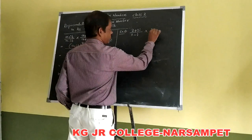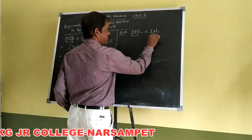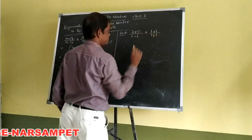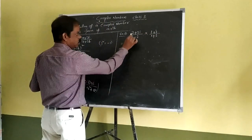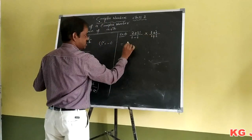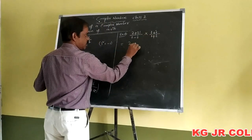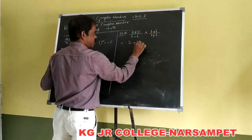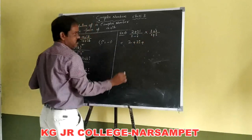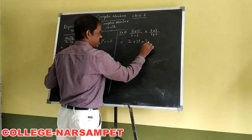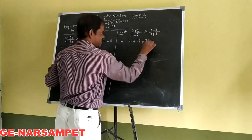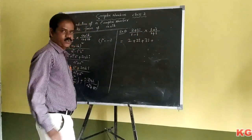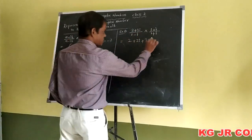So therefore we divide by 1 plus 5i over 1 plus 5i. Expanding the numerator: 2 times 1 equals 2, plus 2 times 5i equals 10i, plus 3i times 1 equals 3i, plus 3i times 5i equals 15i squared.